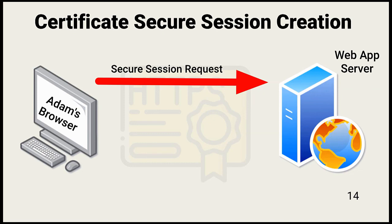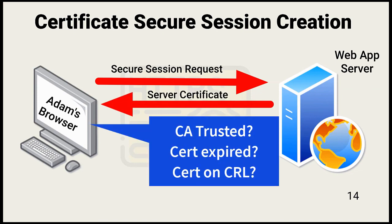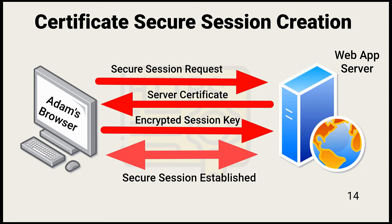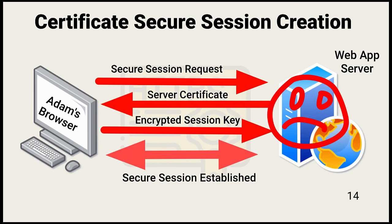In many cases, remote users are also required to authenticate to the server when multi-factor authentication is needed. The server sends a copy of its certificate, which holds its public key. Adam's browser checks the validity of the certificate. If the browser trusts the server CA and the server certificate is not expired or on the certificate revocation list, Adam's computer extracts the server's public key and uses it to encrypt a one-time session key that it returns to the server. The server decrypts the session key using its private key and establishes an encrypted session. If the server is unable to decrypt the key that Adam sent, then it doesn't have the private key — meaning it is likely not who it says it is.